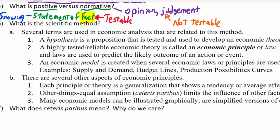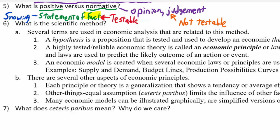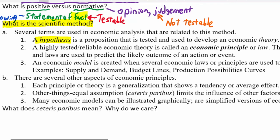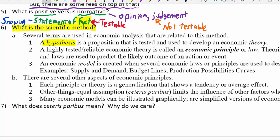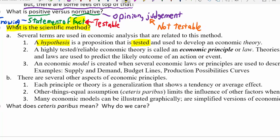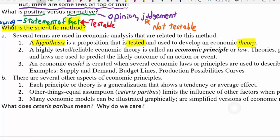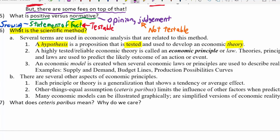Given that economics is a social science, we use the scientific method. You come up with a hypothesis — a proposition you think might be true — then you collect data and come up with a way to test that hypothesis. If the hypothesis stands the test of the data and stands the test of time, we call it an economic theory. Once something becomes tested so thoroughly that we're pretty sure it's right, we call it an economic principle or economic law.